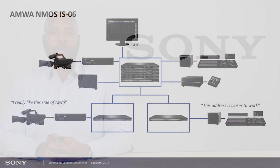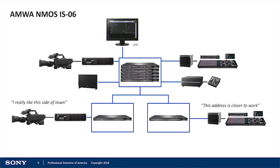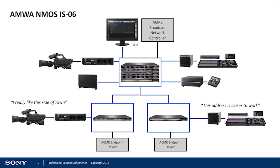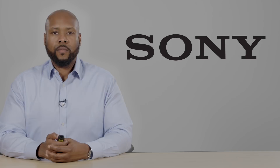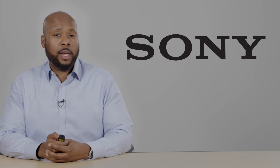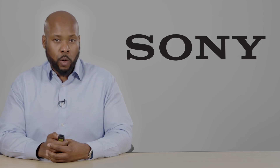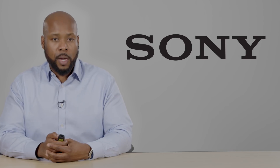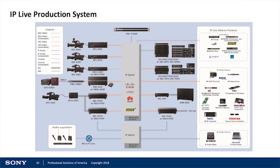In today's environment, if you take a look at this system diagram, you can see a Sony LSM broadcast network controller communicating with other Sony devices on the network. If you introduce third-party devices, let's say from Acme company, then you also must have the Acme broadcast network controller in the environment to communicate with those devices. The Acme broadcast network controller communicates with its devices and also communicates with the Sony LSM to ensure cohesive communication across all nodes on the network. When IS-06 is released, it will allow for a single broadcast network controller to communicate with devices from its own manufacturer or from devices from another manufacturer as well, allowing us to achieve an end-to-end IP-based production system with production devices from multiple vendors all being controlled by a single broadcast network controller.